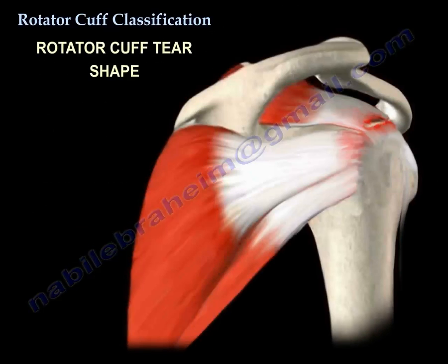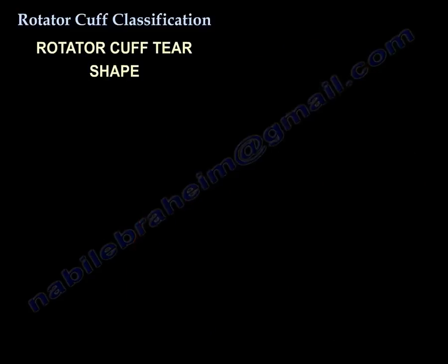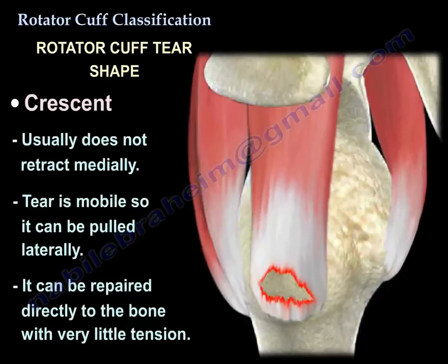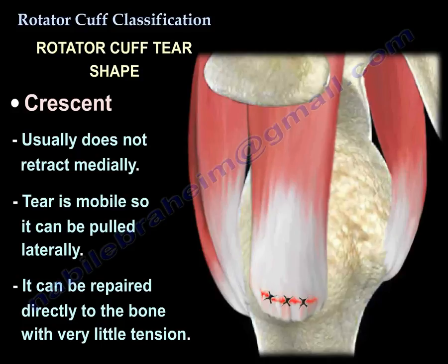Another classification is the cuff tear shape. The first type is a crescent tear, which usually does not retract medially. It is mobile, so you can pull it laterally and repair it directly to the bone with very little tension.